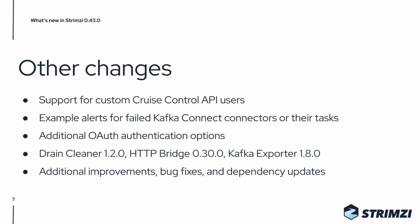As always, there are also many other smaller changes. You can now configure the Cruise Control API users as part of the Kafka custom resource. We now have example alerts for failed Kafka connectors and their tasks, and the OAuth authentication plugin has some additional options. We also updated many of the dependencies and related projects such as the Drain Cleaner, the HTTP Bridge, and the Kafka Exporter. There are of course also many additional smaller improvements and bug fixes.